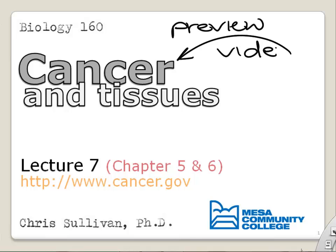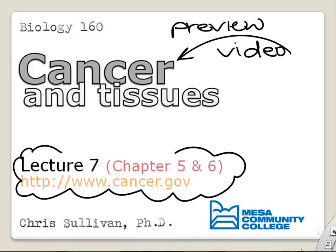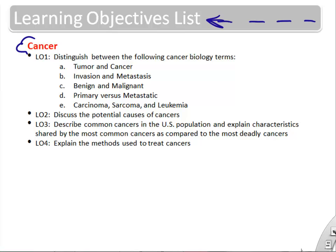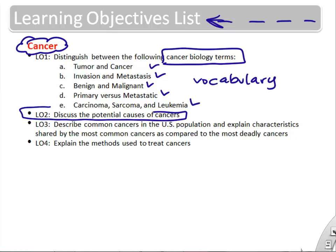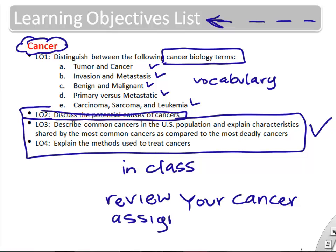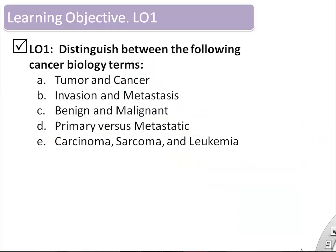This is a preview video and we're going to cover the topic of cancer — this is lecture seven. Since your textbook doesn't have a lot, there is a good resource cancer.gov that you can check out. It's going to involve looking at cells and tissues when they start becoming and growing abnormally. We'll talk about some cancer biology terms, the causes, and review some of the popular and deadly cancers. Each of you should review your assigned cancer before we come to class.